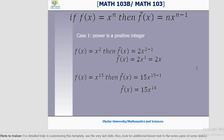Let's do an example: f of x equal to x squared, then f prime x equals 2 into x power 2 minus 1. n is 2, so 2 minus 1 is 1 — the power comes down. 2 into x power 1 equals 2x. Another example: the power is 15, n equals 15, n minus 1 is 14, so the derivative of x power 15 is 15 into x power 14.